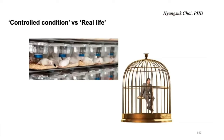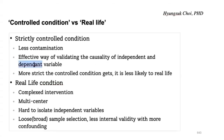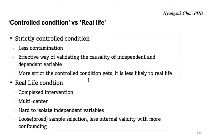We do the experiment with rats, rabbits, and chimpanzees, and even with humans. But do you think our humans can react just like normal in this cage? Strictly controlled condition means less contamination — contamination not by germs, but by bias. It is an effective way of validating the causality of independent and dependent variables. But the more strict the controlled condition gets, the less likely it is to happen in real life.